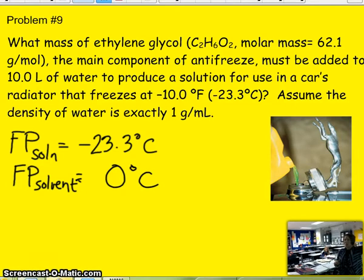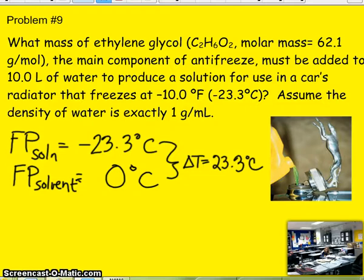So the normal freezing point of water is 0 degrees Celsius. So if you know what water normally freezes at and you know we want to depress the freezing point to negative 23.3, you can get the freezing point depression or you can get the change, the difference between the freezing point of the pure solvent and the freezing point of the solution. So I know here my delta T then is going to be 23.3 degrees Celsius.